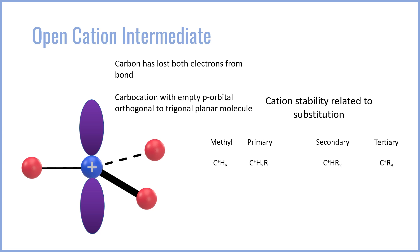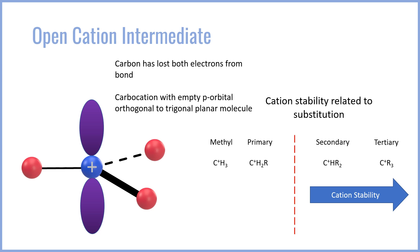In terms of stability, the more substituted — that is, the closer towards the tertiary carbon it is — the more stable the cation is. There's a line somewhere between the primary and the secondary cation where the primary and methyl cations are extremely unstable — in fact, far too unstable for the SN1 reaction. SN1 will never happen on a methyl or primary cation, whereas secondary cations are okay and tertiary cations are very stable and lend themselves very well to SN1 reactions.